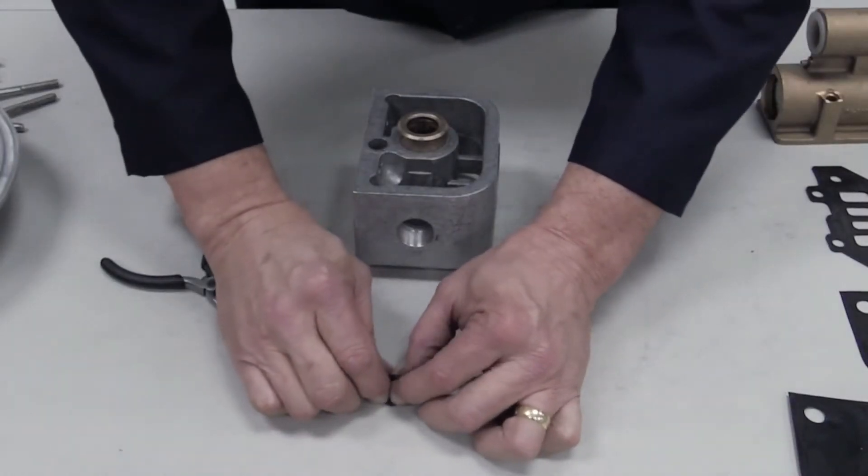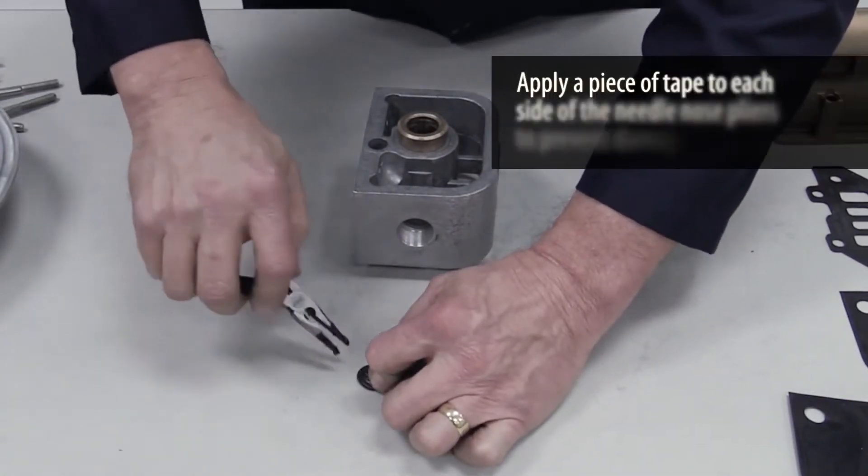Each new glide ring must be compressed using needle-nose pliers so it will fit into the bore.